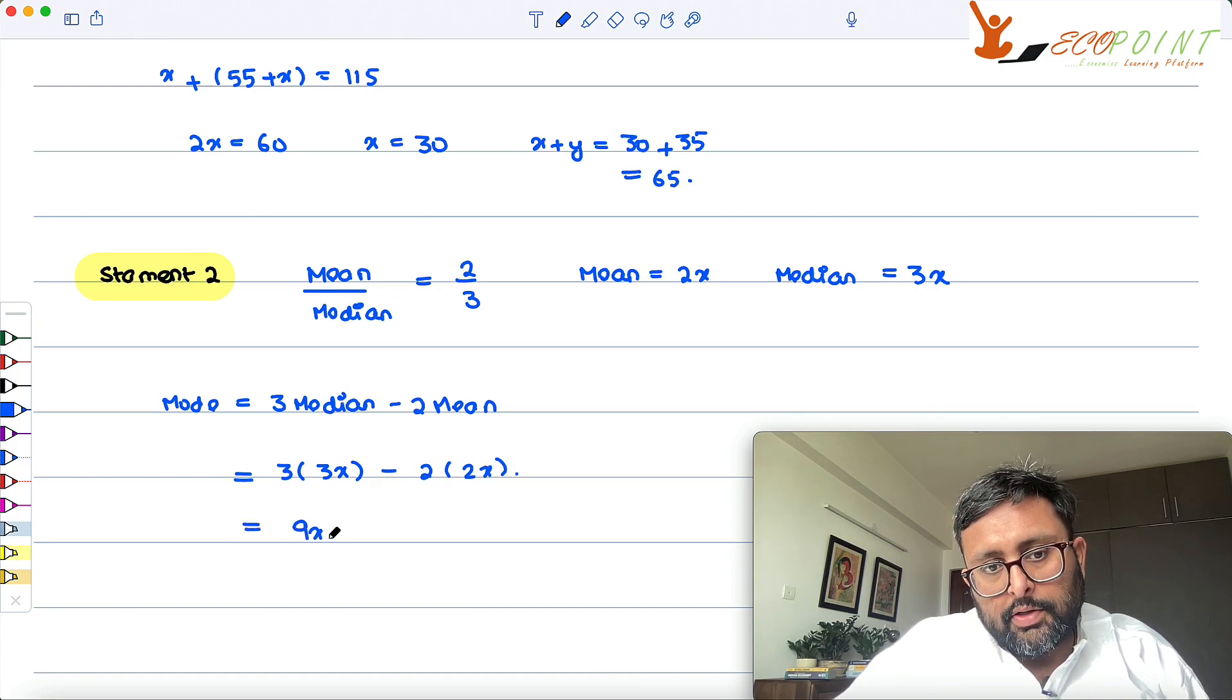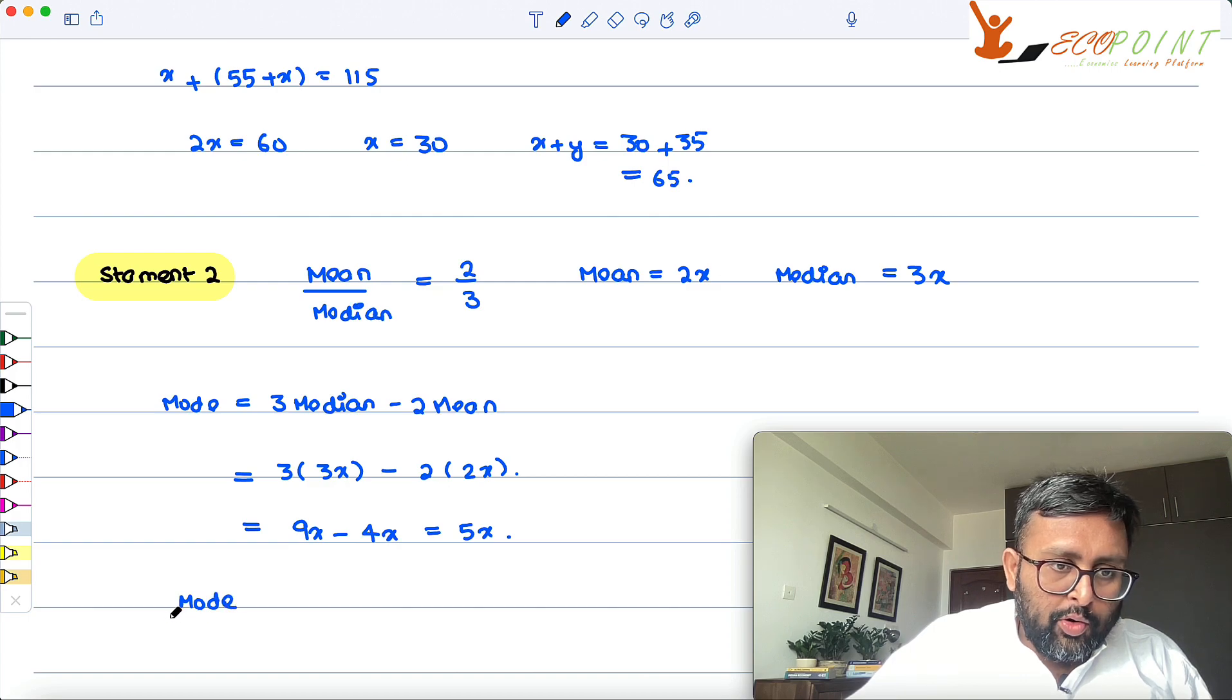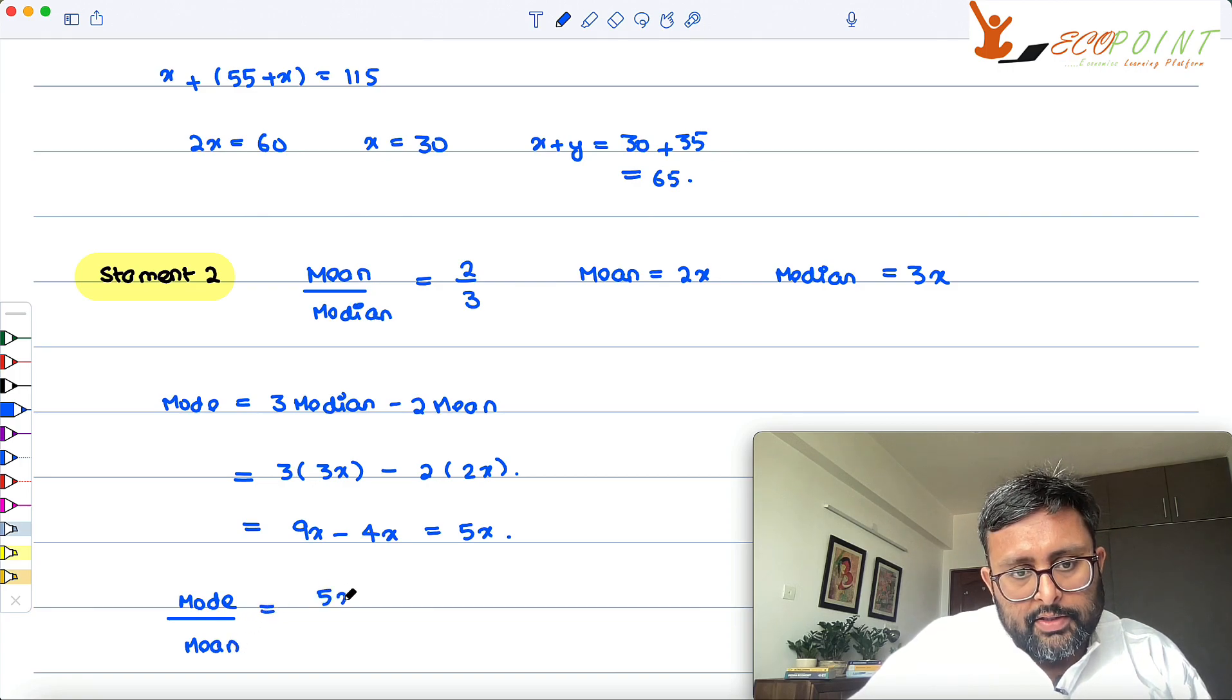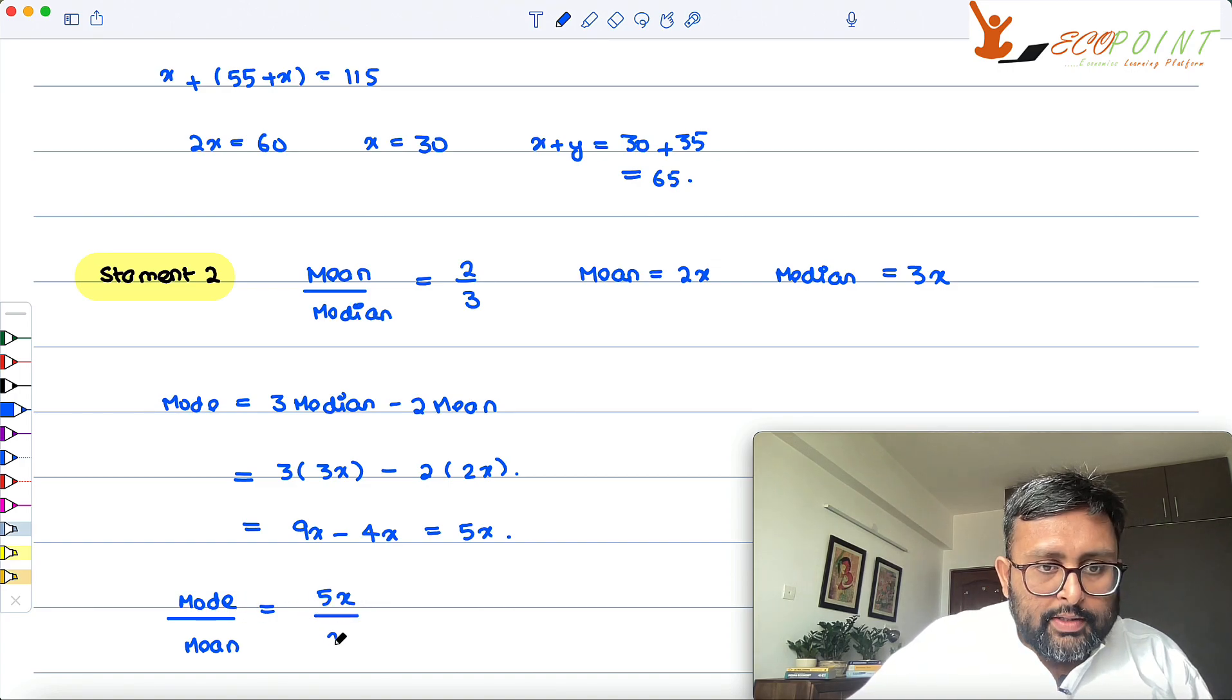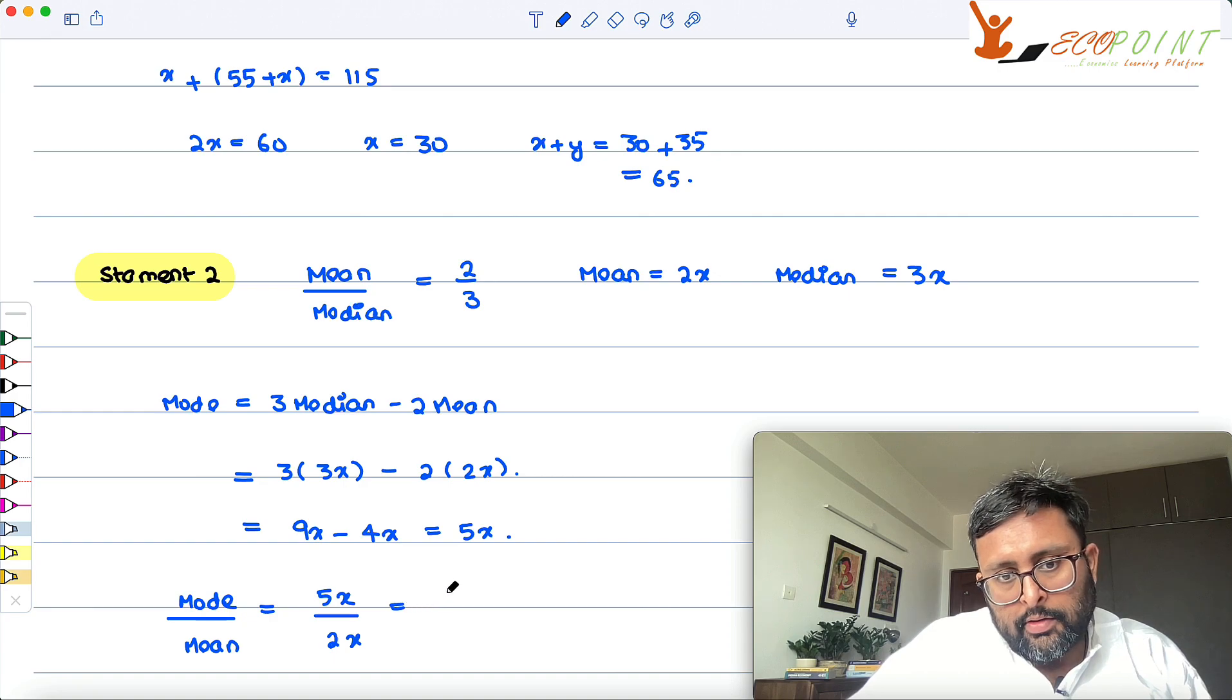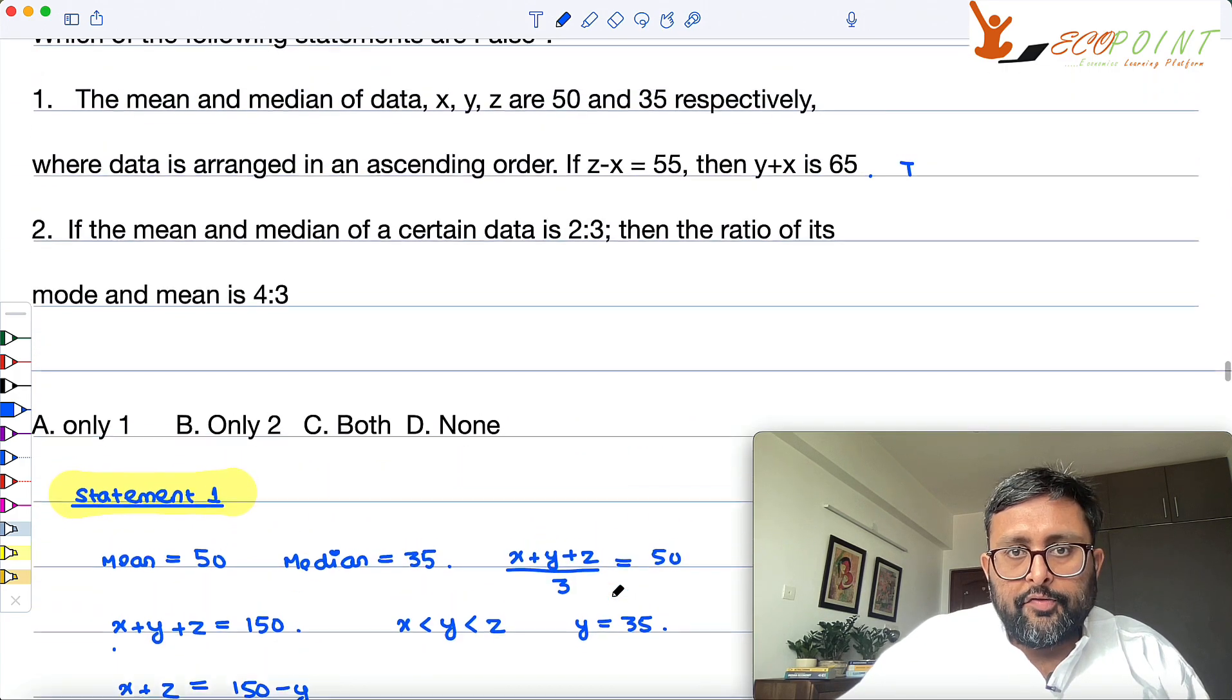So this is 9x minus 4x, which is 5x. And what is asked from you is, what is the ratio of mode to mean, right? What is mode? 5x. The ratio is 5 is to 2, right? 5 is to 2.